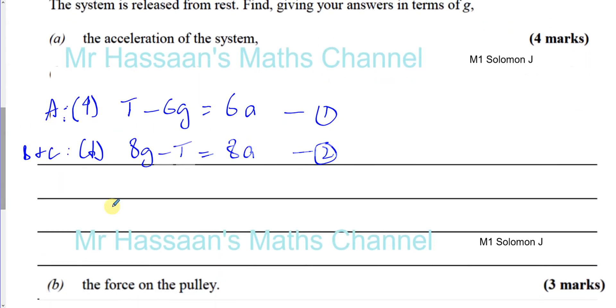So these can now be solved simultaneously. Probably the easiest thing I can do is add the two equations together, because T's have the same magnitude, but different signs. So I can say that if I add them together, I'll have the T's will be eliminated, T minus T is 0, and minus 6G plus 8G is 2G. And 6A plus 8A is 14A. So now I can say A is equal to 2 over 14, which is 1 over 7G. So that's the acceleration. That's the answer to part A. And it says giving your answers in terms of G. So I don't now say G is 9.8 and then write down the decimal value. I leave it in terms of G.